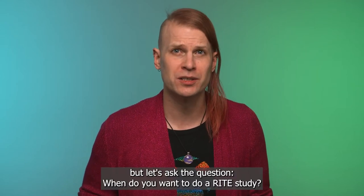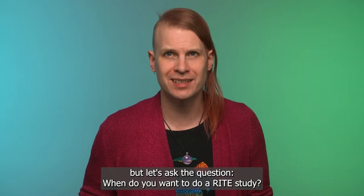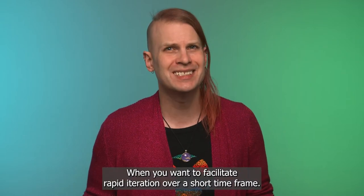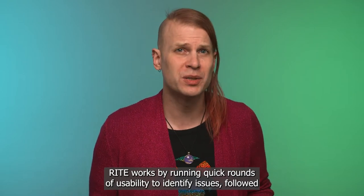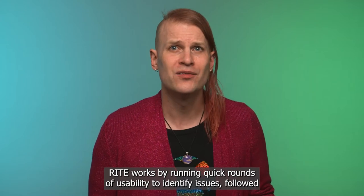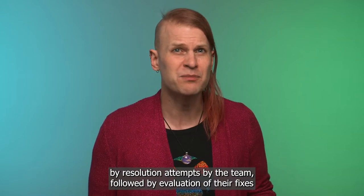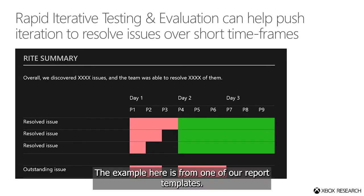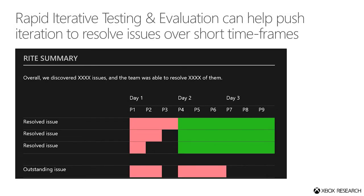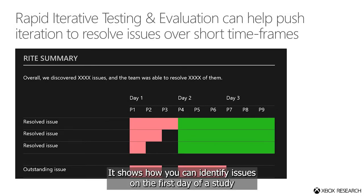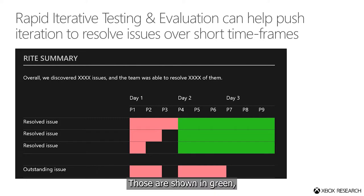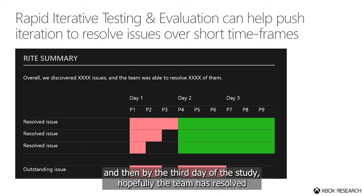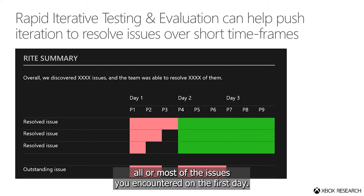But let's ask the question: when do you want to do a RITE study? The answer is pretty simple — when you want to facilitate rapid iteration over a short time frame. RITE works by running quick rounds of usability to identify issues, followed by resolution attempts by the team, followed by evaluation of their fixes. The example here is from one of our report templates. It shows how you can identify issues on the first day of a study with three participants — those are shown in red — and then track whether issues have resolved or not, shown in green. By the third day of the study, hopefully the team has resolved all or most of the issues you encountered on the first day.